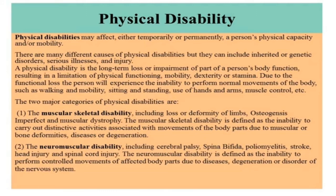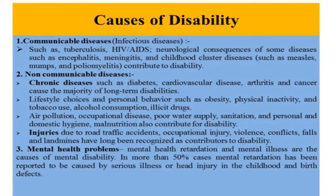The third type is physical disability, which is a limitation on an individual's physical functioning, mobility, or stamina. There are many different causes of physical disabilities, including inherited or genetic disorders, serious illness, and injury. The two major categories of physical disabilities are musculoskeletal disability and neuromuscular diseases. The causes of disability include genetic causes, poverty, mental health problems, accidents, infections, diseases, disturbance in endocrine glands, malnutrition, poor access to healthcare, nuclear accidents, toxic materials, pesticides, illness, lack of education, wars, medicine and vaccines, and dangerous working environments.